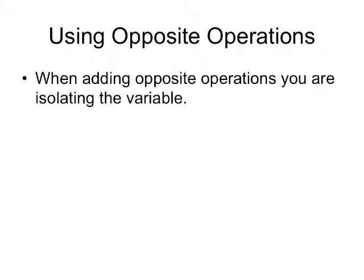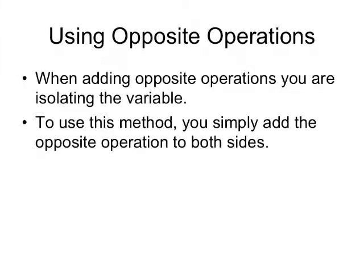To solve equations, you could use opposite operations. When adding opposite operations, you are isolating the variable. To use this method, you simply add the opposite operation on both sides of the equal sign.